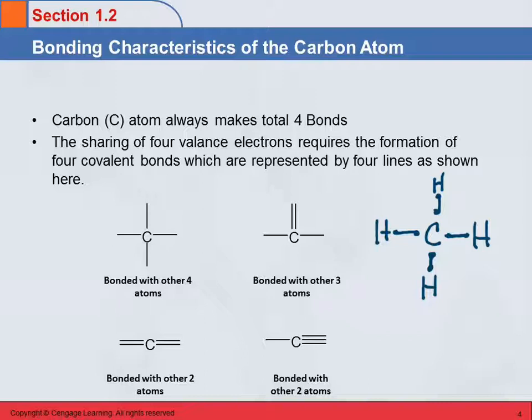So we will see this throughout the semester, that carbon always makes 4 bonds. It can do this in a couple of different ways. Like in this picture I drew, we can have carbon bonded with 4 other atoms, carbon making 4 single bonds. Carbon can also bond with 3 atoms by making 2 single bonds and a double bond, sharing 2 electrons with another element that's also sharing 2 electrons. But that's still 4 bonds. The double bond is 2 bonds between the same 2 atoms.